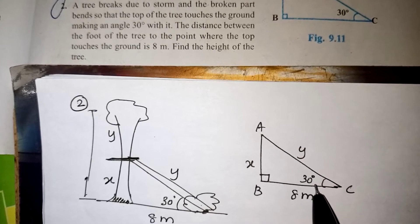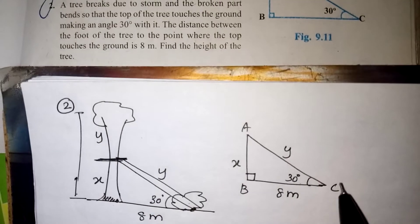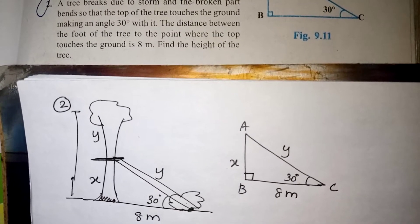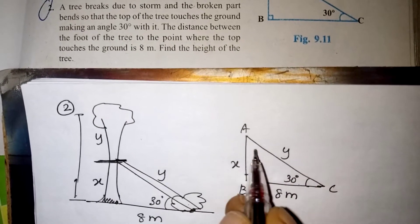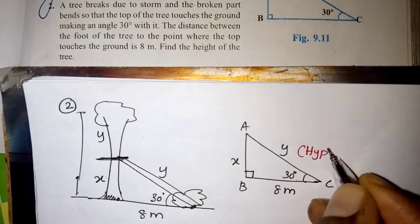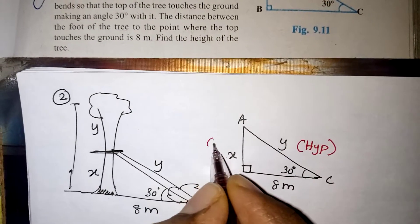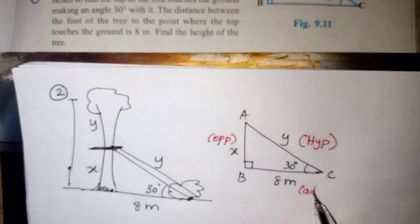Our aim is to find the x value and y value, then add both to find the total height of the tree. From the diagram, we identify the sides: the side opposite 90 degrees is the hypotenuse (the longest side). The side opposite our 30 degree angle is the opposite side, and the remaining side is the adjacent side.